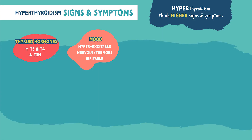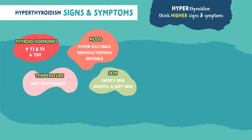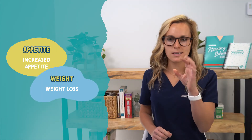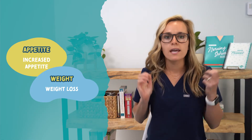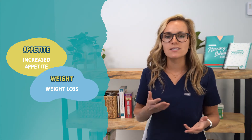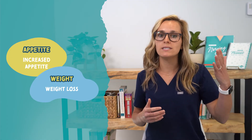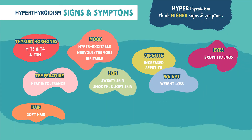In hyperthyroidism, these patients are going to be hot, so they're going to have heat intolerance. You'll also see sweaty skin that is smooth and soft, as well as soft hair, because the thyroid gland is responsible for growth. As for appetite and weight, we're going to see increased appetite and weight loss. The thyroid gland plays a big role in metabolism, which helps burn calories. Think of an athlete training and burning lots of calories — they have huge appetites but aren't gaining weight. These clients are so hyper with big appetites, they just burn it right off. As for the eyes, you're going to see exophthalmos — bulging eyes due to fluid accumulation behind the eyes. Think excess thyroid for exophthalmos.